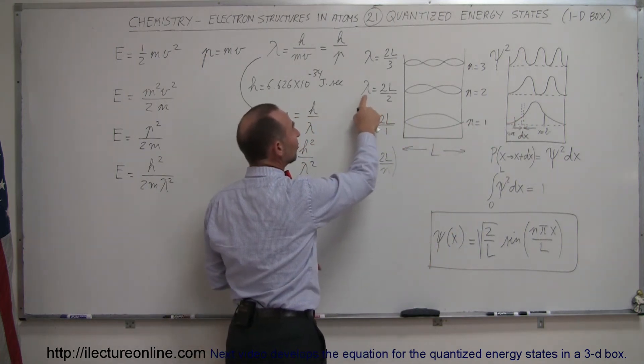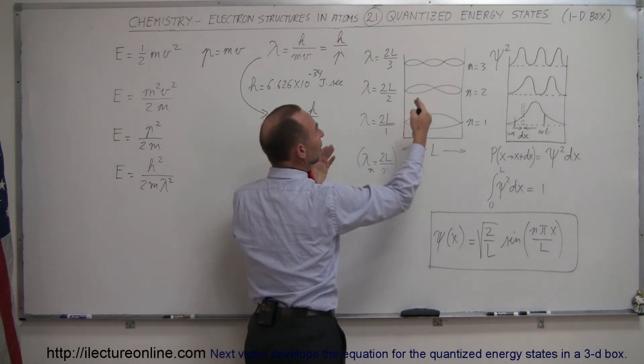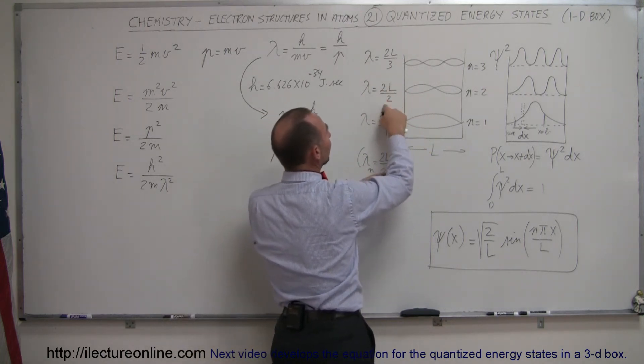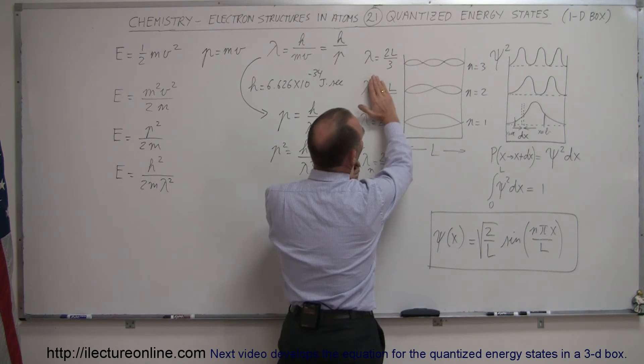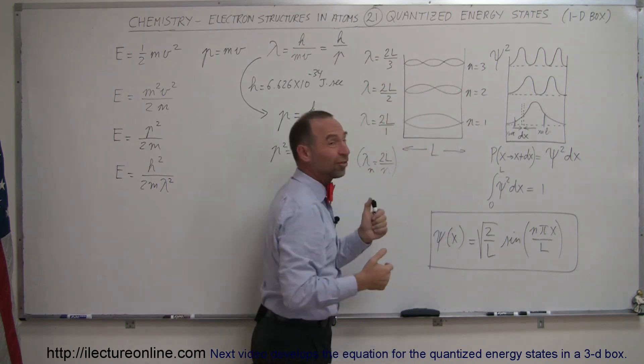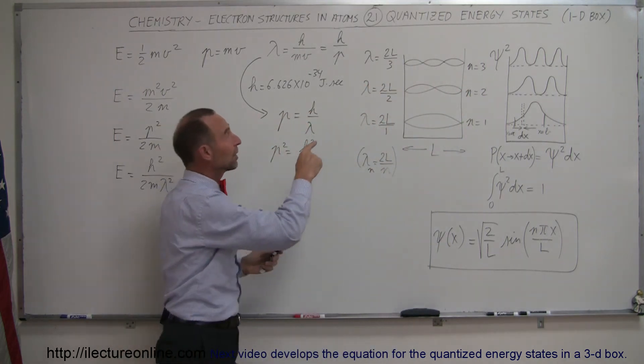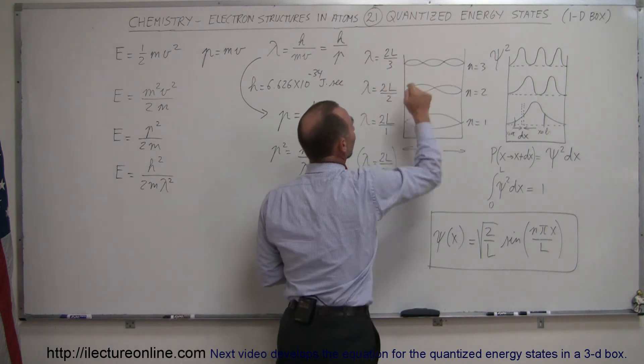In the next stage, the wavelength is equal to the length of the box. So I take 2l divided by 2, that becomes length, and so there you can see the wavelength is just equal to the length of the box. Over here, it's two-thirds the length of the box, and so forth.